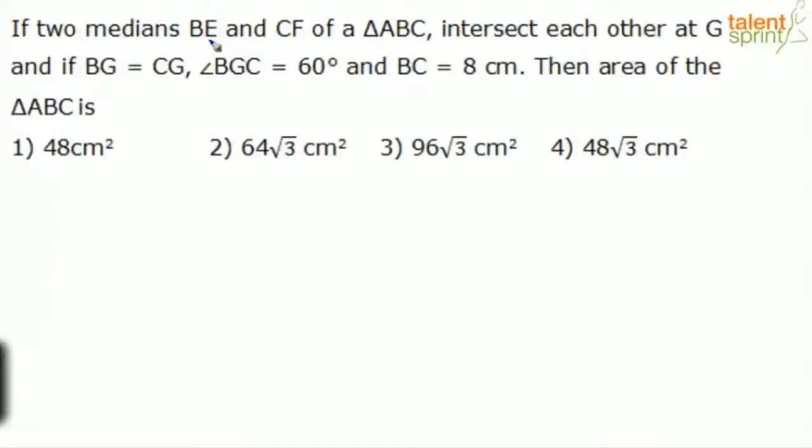The question says if two medians BE and CF of a triangle ABC intersect each other at G, and if BG equals CG, angle BGC is 60 degrees, and BC equals 8 centimeters, then the area of triangle ABC is. The given options are 48, 64 root 3, 96 root 3, and 48 root 3.